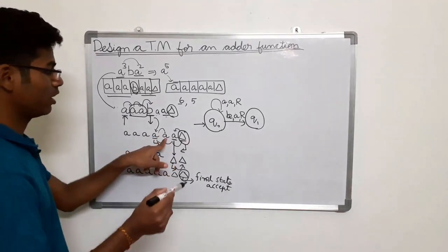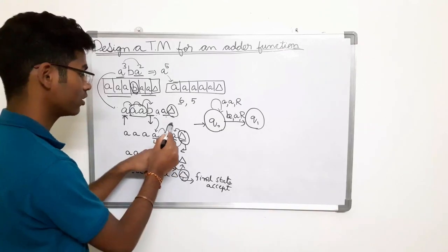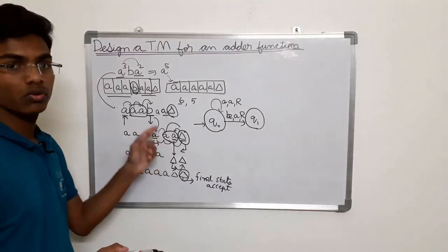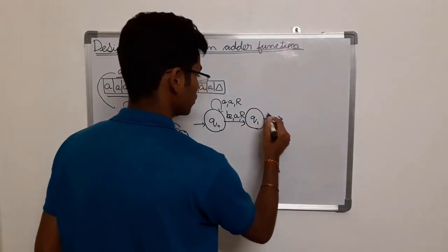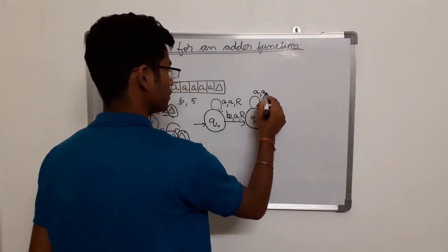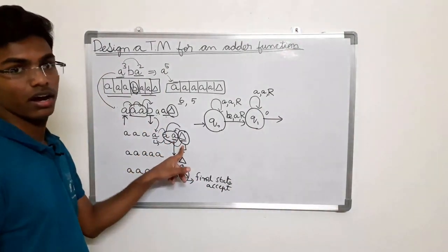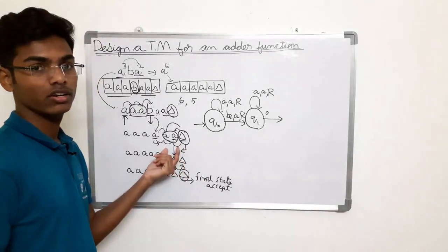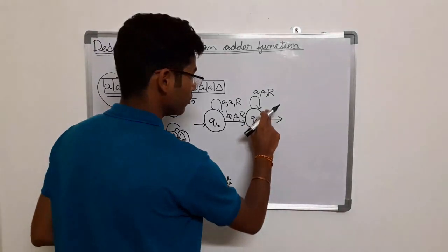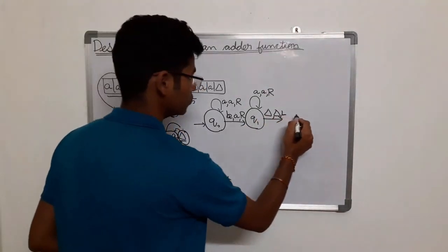After making small b as small a and moving right, your goal is to reach delta. From q1, there is nothing to do with these a's so keep them as-is and move towards right. Once you have reached delta, move towards left till you find small a. Keep delta as-is and move towards left to reach a new state q2.